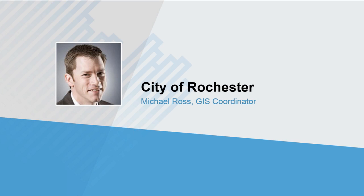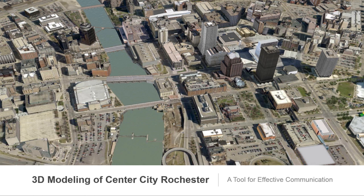Hi, everyone. I'm Mike Ross. As Brooks mentioned, I'm the GIS coordinator for the city of Rochester, New York. Rochester is the third largest city in New York State — slightly smaller than Buffalo and quite a bit smaller than New York City. Rochester is the hub of the Genesee Finger Lakes region of western New York, and the metro area has a little over a million people. As with many American cities, sprawl and disinvestment over the past half century has caused us some challenges, but things are turning around.